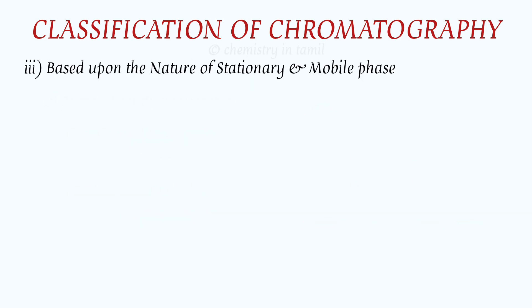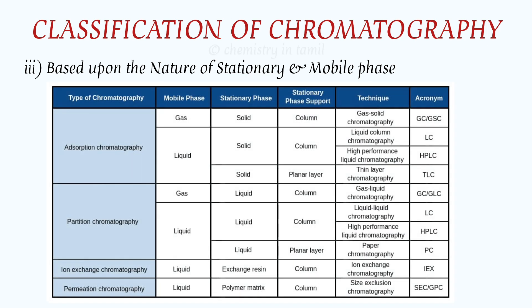The third classification is based upon the nature of the stationary phase and mobile phase. The stationary phase can be solid, liquid, or gas, and the mobile phase can similarly be solid, liquid, or gas. Some combinations are not practically possible in chromatography.